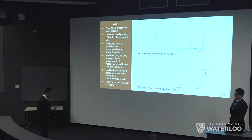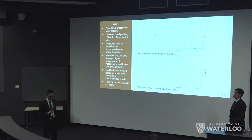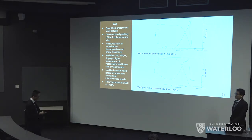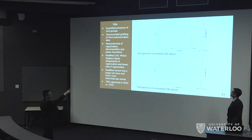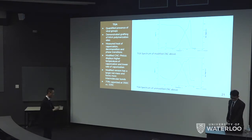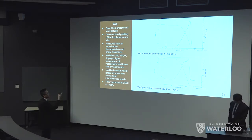Now that we've confirmed successful CNC modification with maleic anhydride, we perform the polymerization, resulting in MAA polymerized onto CNC. The whole point of using maleic acid CNC is to increase the structural rigidity of our polymer system. To demonstrate this, we use TGA and compare to a negative control where we don't perform the maleic anhydride CNC polymerization process. We find that our modified CNC has a 15-degree higher vaporization point than unmodified CNC. The 15-degree improvement may seem small, but that's likely due to the 7% modification rate.